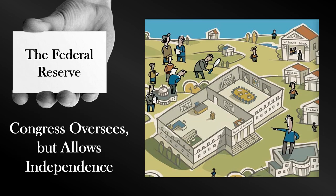The Fed theoretically has strong independence from the United States government. While Congress oversees the entire Federal Reserve System and the Fed must work within objectives established by Congress, Congress also gave the Federal Reserve the autonomy to carry out its responsibilities without political pressure. This is the goal — the independence of the Fed. Each of the Fed's three parts — the Board of Governors, the Regional Reserve Banks, and the Federal Open Market Committee — operates independently of the federal government. This independence is meant to strengthen the Federal Reserve's ability to pursue long-term monetary policies rather than short-term political interests.